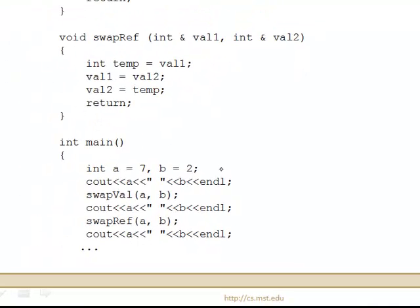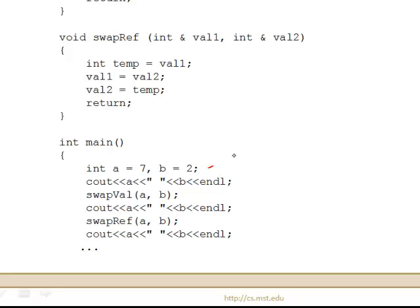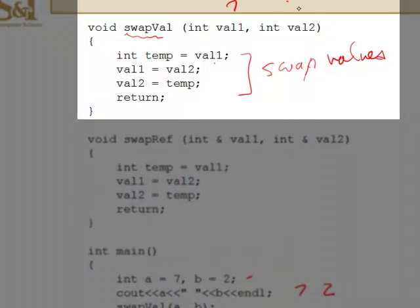Come down here to main. We declare a and b to be of type int with values 7 and 2. Output them. What do you get? You get 7, you get 2. Now pass them to swapVal. So this is 7, this is 2, this is 7, so this is 7. This is 2, so this is now 2.